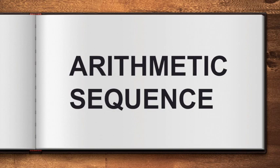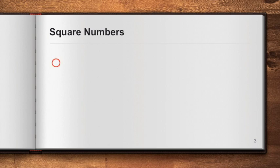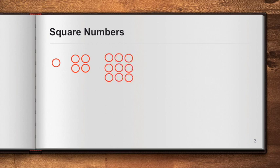Let me give you first some common examples of sequences or patterns and one of those is square numbers. Why are they called square numbers? Let's present this in a geometrical way. We begin with one and then followed by four circles because those four make up a square. The third figure has nine circles because as you notice this is a three by three square, so we have a total of nine circles.